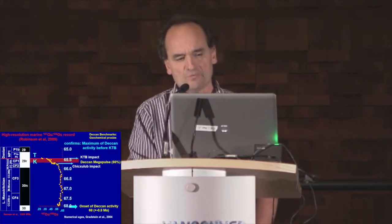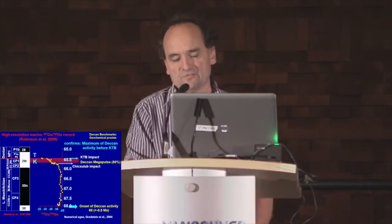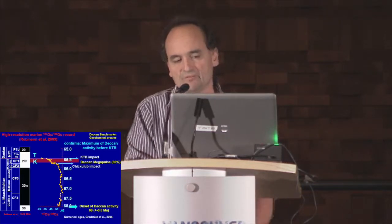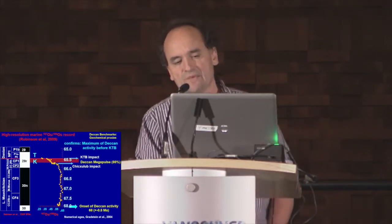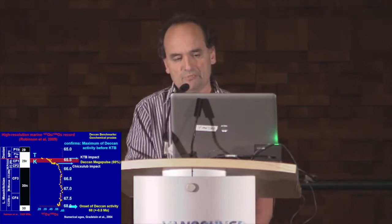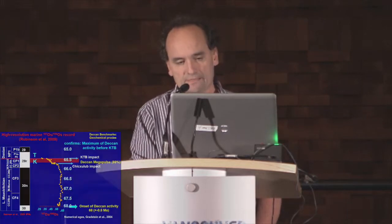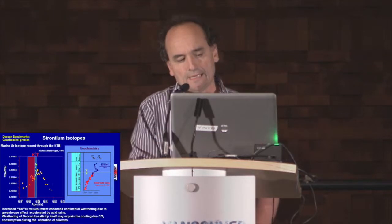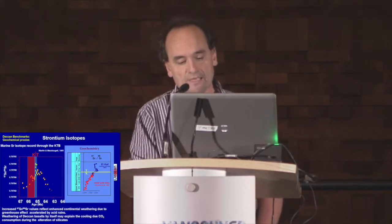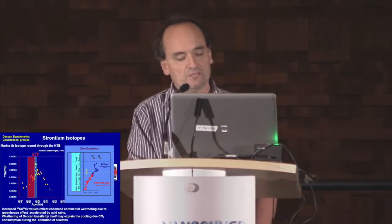The osmium isotopes record — a paper by Robinson et al. — shows more negative values marking the onset of Deccan activity, but mainly close to the K-T boundary: 200,000 to 300,000 years before the K-T boundary you have increasingly negative values corresponding to the Deccan megapulse. These are also partly linked to the Chicxulub impact predating the K-T boundary, marked by the most negative osmium values. Marine strontium isotopes are also interesting — increased values reflect enhanced continental weathering due to greenhouse effect, probably accelerated by acid rain well before the K-T boundary, and weathering of Deccan basalt by itself may explain cooling via CO2 consumption during silicate alteration.